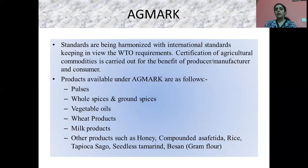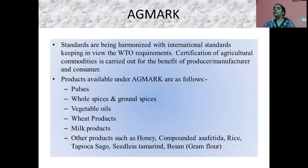These 205 products include pulses, whole spices and ground spices, vegetable oils, sweet products, milk products, and some other products such as honey, compounded asafoetida, rice, tapioca sago, seedless tamarind, and besan, also known as gram flour. So these are all the products under Agmark.